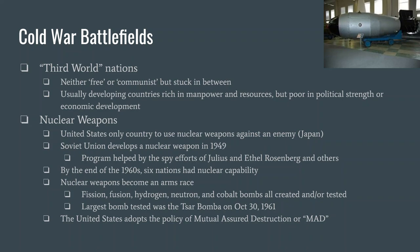Nuclear weapons became an arms race. There are fission bombs, fusion bombs, hydrogen bombs, and neutron bombs. The most powerful bomb ever created was a cobalt salt bomb. The largest bomb ever actually tested was the Tsar Bomba by the Soviet Union on October 30th, 1961 — a bomb with such a theoretically high yield that it was not actually tested at full power. The United States came up with the idea of Mutual Assured Destruction, or MAD.